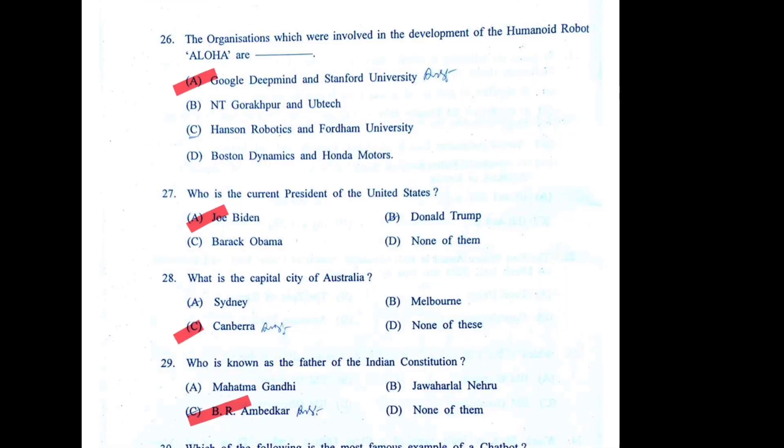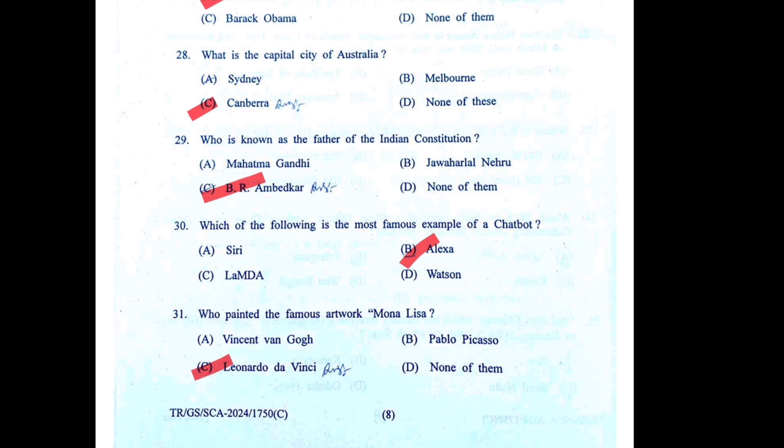The organizations involved in developing the humanoid robot ALOHA are Google DeepMind and Stanford University. Question 27: Who is the current President of the United States? — Joe Biden. Question 28: What is the capital city of Australia? — Canberra. Question 29: Who is known as the Father of the Indian Constitution? — B.R. Ambedkar. Question 30: Most famous example of a chatbot — possibly Alexa.